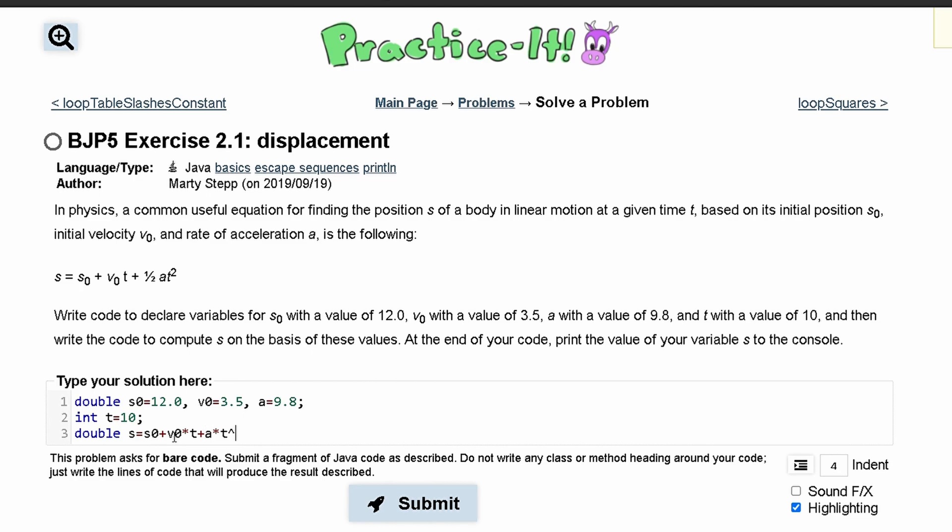But we can't just do t squared like this, because the code, or our code will not register that, so we'll have to do t times t for here, and then we can divide that by two.